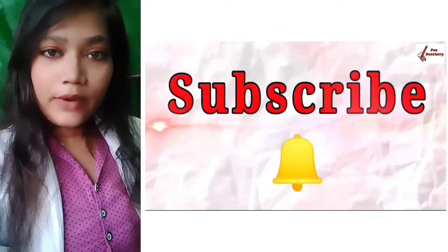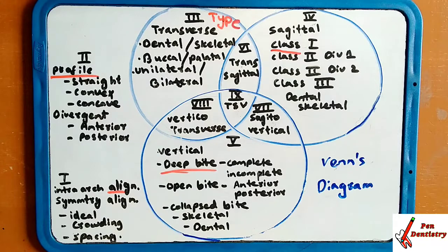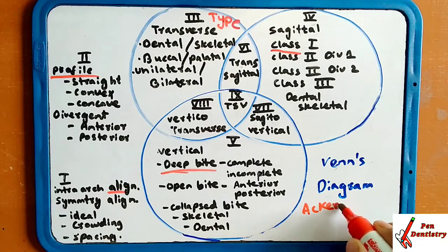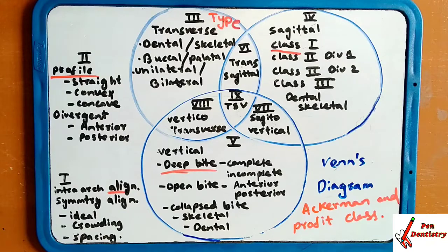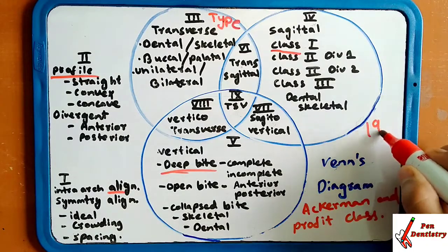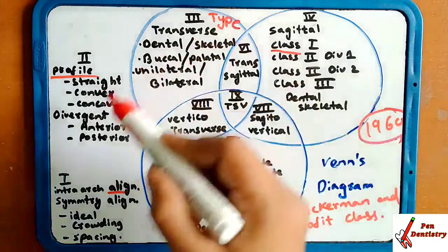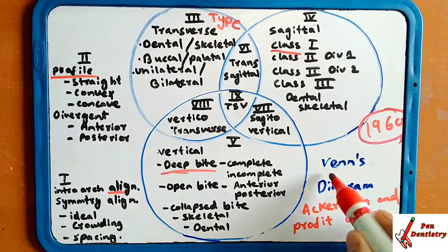We are going to learn about the Venn Diagram by Ackerman-Proffit Classification. Today our topic is Ackerman-Proffit Classification. He proposed this classification in 1960 to overcome the limitations of the Angle classification, and he gave the Venn Diagram for that purpose.